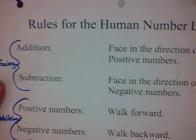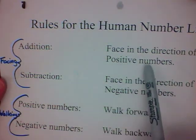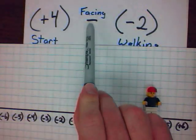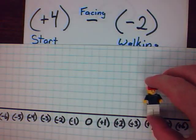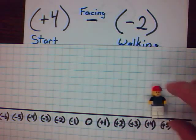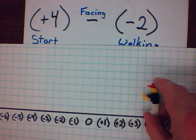For the facing, if it's addition, you face in the direction of the positive numbers. If it's subtraction, you face in the direction of the negative numbers. In this case, it's subtraction. So, we'll have him face in the direction of the negative numbers. He won't stay, but I will hold him there in a few moments. He's going to face that way. He's going to look at the negative numbers.